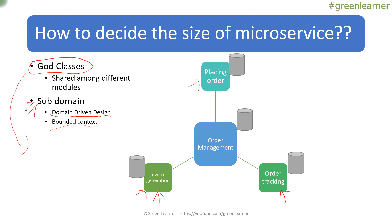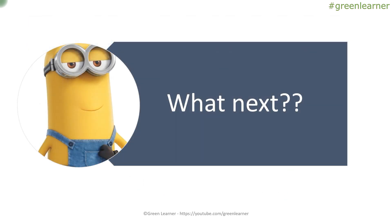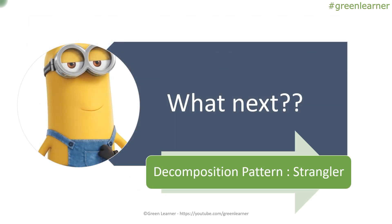So we have seen how we can make use of business functionality and subdomain to decompose a monolithic application into microservices architecture. The next decomposition pattern we are going to see is the strangler pattern, which is very important when converting a monolithic application to microservices. I'll see you in the next video with this decomposition pattern. Till then, take care. Bye-bye.